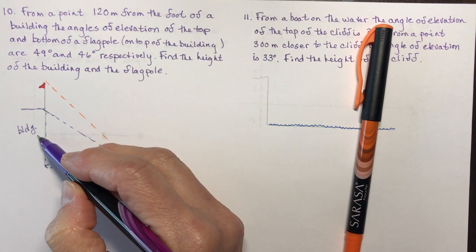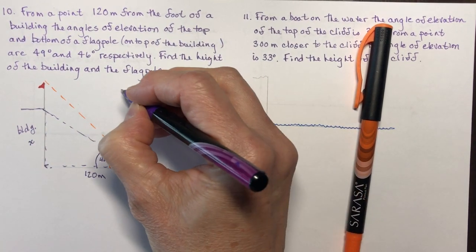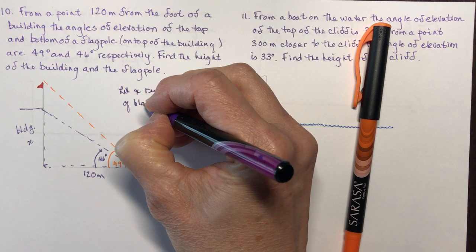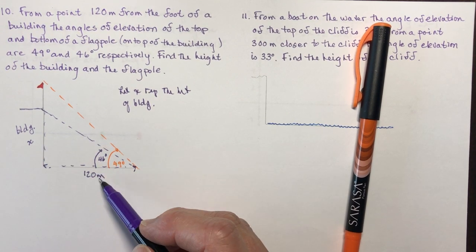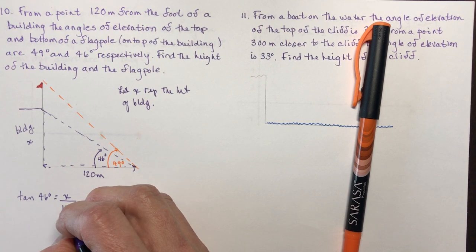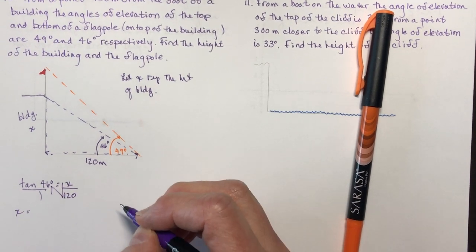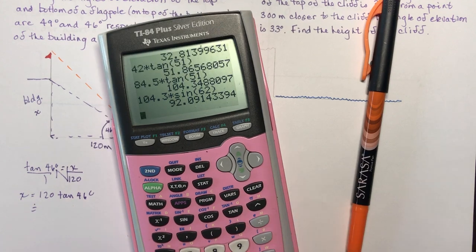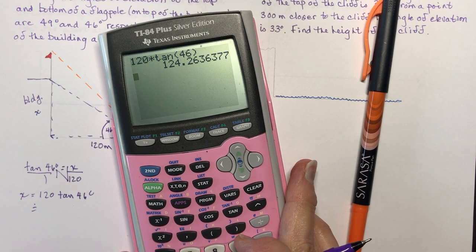Let x represent the height of the building. For the 46-degree angle, x is the opposite side and 120 is the adjacent. So tan of 46 degrees equals x over 120, meaning x equals 120 times tan of 46. Using the calculator: 120 times tan 46 gives approximately 124.3 meters.